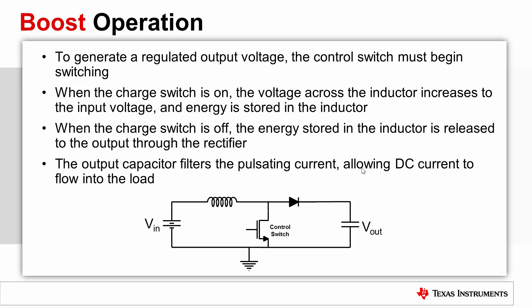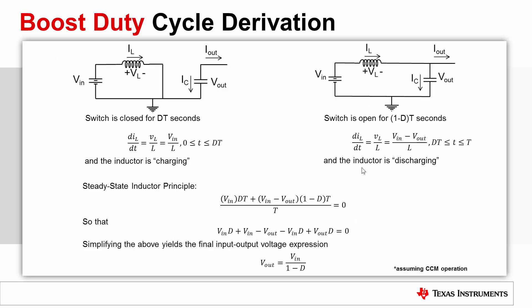A boost converter can be thought of as a small bucket of water that continuously dumps water into a larger bucket of water. In the first state, the control switch is closed and the inductor is charging with the voltage of V_in. Let's assume that the switch is closed for D·T seconds, where D is the duty cycle and T is the switching period. In the second state, the control switch is open and current continues to flow through the inductor, which is now connected to the load. In this state, the inductor is discharging as the voltage is flipped across the inductor and has the value of V_in minus V_out. The time spent in this state is (1 − D)·T.